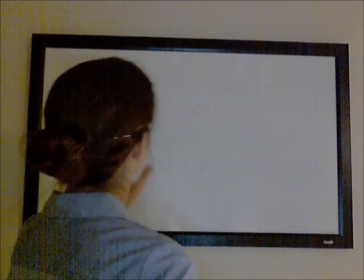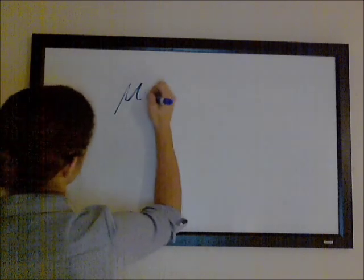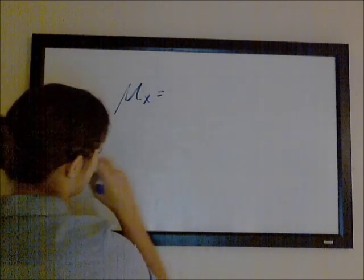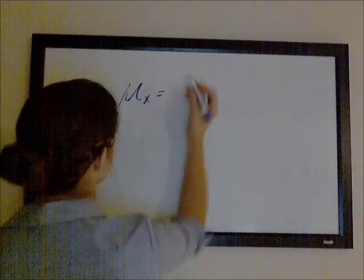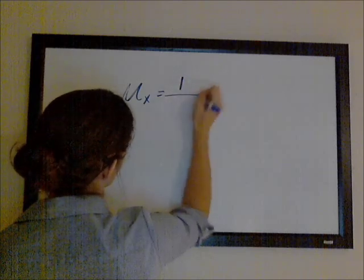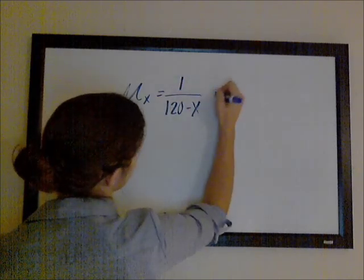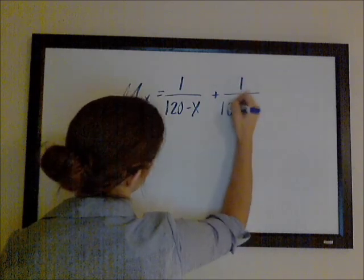One trick from my study manual that could be useful on the exam has to do with the force of mortality when it's broken up into the sum of two de Moivre forces of mortality. For example, you have the force of mortality for x equal to 1 over 120 minus x, plus 1 over 100 minus x.